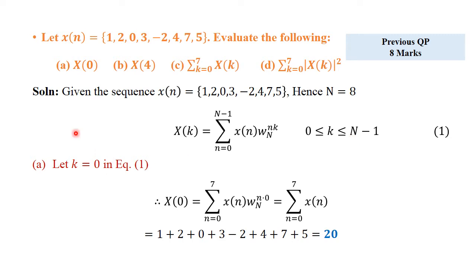First, let us calculate X(0). We substitute k=0 in the DFT expression. Therefore X(0) = summation n=0 to 7 of x(n) · W_N^(n·0). Substituting 0, the twiddle factor becomes equal to 1, so what remains is just the summation n=0 to 7 of x(n). This is the sum of all values in x(n), which equals 20.